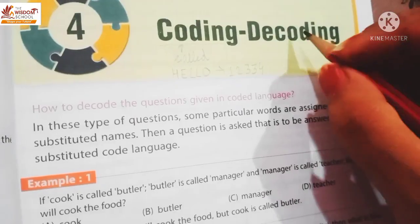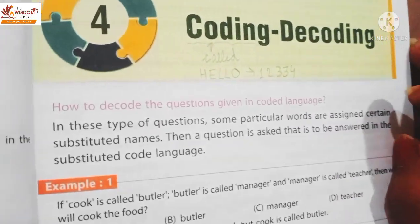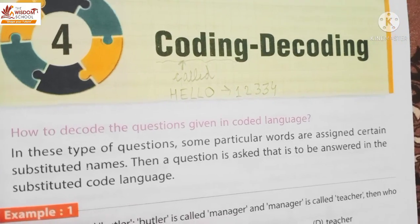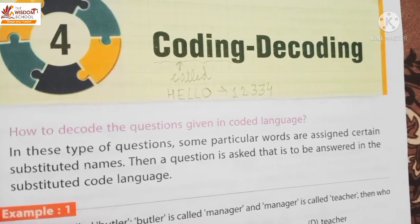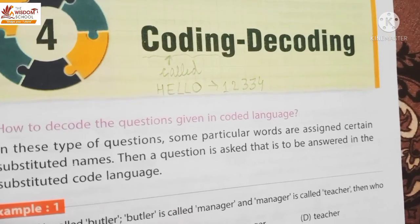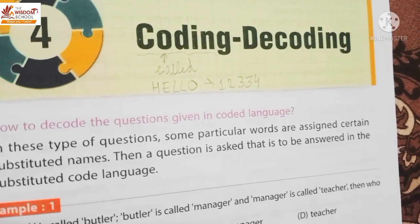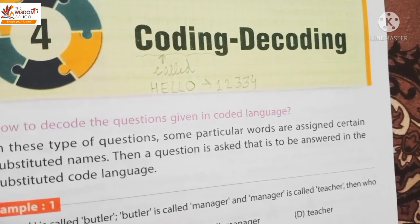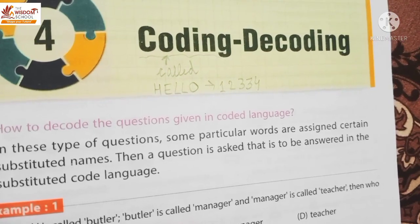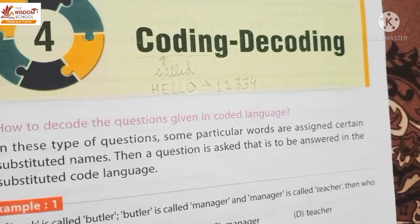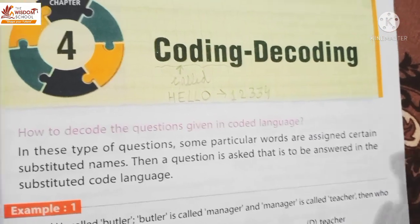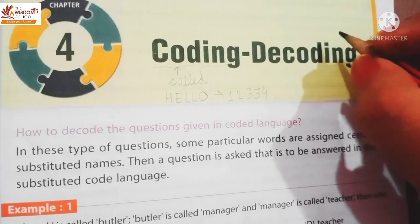Okay bachay, or decoding kya hota hai? Decoding is the reverse of coding. Decoding kya hota hai bachay? Kis se coded word ko fir se normal way mein represent karna is decoding. To bring a coded word back to its normal form - usse kehta hai decoding.